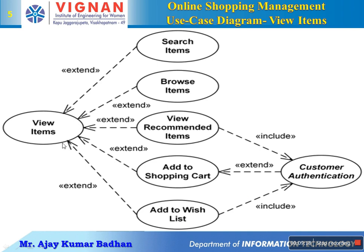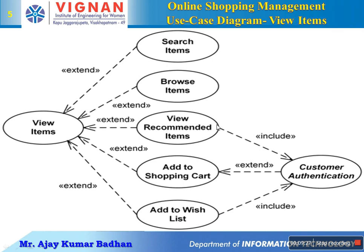Now I am extending the view items use case and elaborating it. View items generally has all these options: search item, browse item, view recommendations, add to shopping cart, and add to wish list. Some use extend relationships and some use include relationships. When you talk about view items, you may be searching an item, browsing an item, or viewing recommended items — items provided by the website based on your previous searches. Adding to the shopping cart and adding to the wish list are also included under view items.